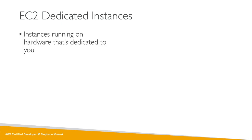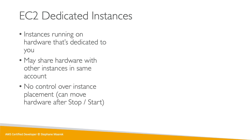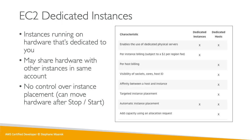Slightly less restrictive are dedicated instances — you run your instance on your own hardware, but you don't get control over the hardware. Other instances in your account may end up on the same hardware, but it's still only your account. You don't get control over instance placement, meaning if you stop and start an EC2 instance it may move between different hardware. There's a table on the AWS support website that clarifies this: with a dedicated host you get visibility into sockets, cores, and host ID and can place instances as you like; with dedicated instances you just know the server is dedicated to you but have no control over the server itself.